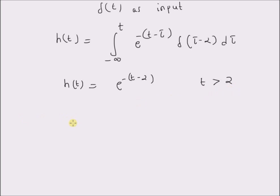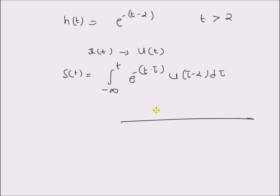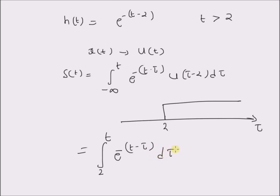The unit step response s(t) is obtained by replacing the input x(t) with u(t). So s(t) = integral from minus infinity to t of e^(-(t-τ)) · u(τ-2) dτ. The term u(τ-2) means the signal is only valid after τ > 2. On the τ-axis, the unit step signal starts from τ = 2, so this becomes the integral from 2 to t of e^(-(t-τ)) dτ.